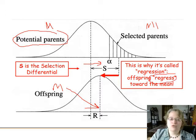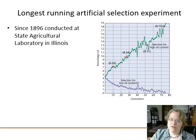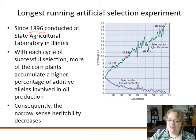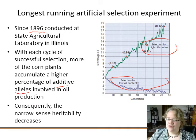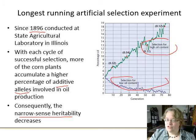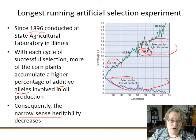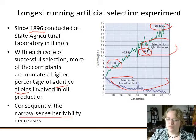Here's one of the longest-running artificial selection experiments, started in 1896 at the state agricultural laboratory in Illinois — over 100 years of breeding corn for high and low oil content. With every cycle of selection, more corn plants accumulate additive alleles for oil production. The narrow sense heritability is decreasing over time: at generation 10 it was about 0.32; by generation 50 it had dropped to 0.1, because they're running out of oil production alleles. The low oil content line has gone nearly to zero.